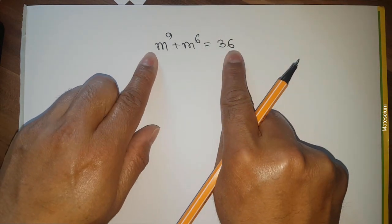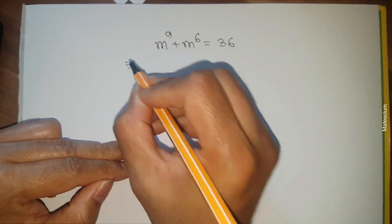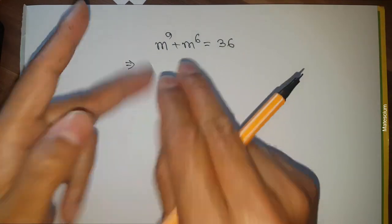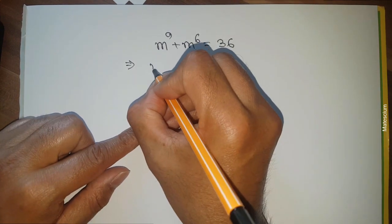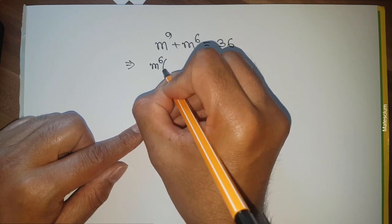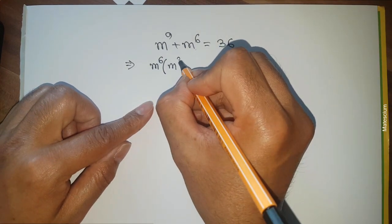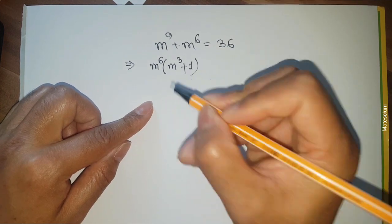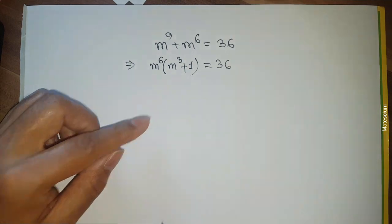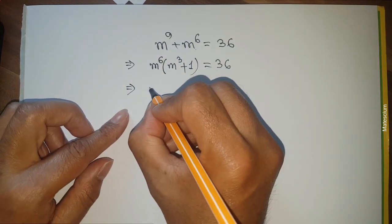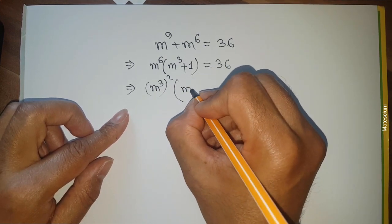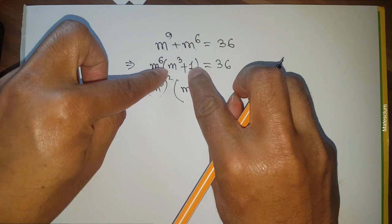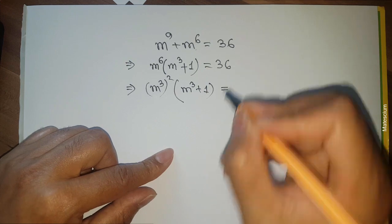Now here is an even simpler solution. From the original equation, I can directly factor out m⁶ as a common factor. Taking m⁶ common from m⁹ and m⁶ gives m⁶(m³ + 1) = 36. I then rewrite m⁶ as (m³)², so the equation becomes (m³)²(m³ + 1) = 36.